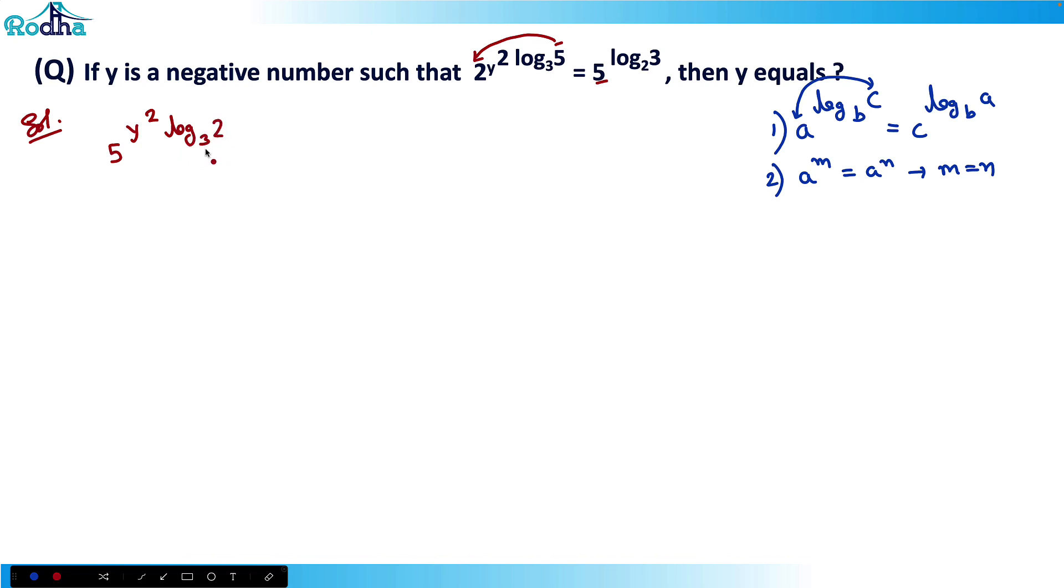So be careful when writing because a lot of powers are involved. This is 5 raised to y square log 3 base 2, just like that. Now this is equal to 5 raised to log 3 again base 2.